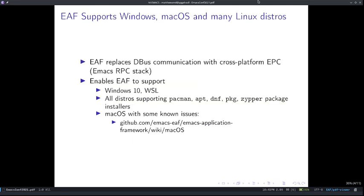Since last year, EAF has replaced the deepest communication technology with the cross-platform EPC stack, which has an Elisp implementation and a Python implementation — exactly what we need. This and some other changes enable EAF to support Windows 10 and Windows Subsystem for Linux, as well as all distros that support Pacman, APT, DNF, PKG, and Zypper package installer commands, which includes Arch-based, Debian-based, Ubuntu-based, Fedora, etc. Do note that macOS support works with some minor issues — have a look if you want to try it out.